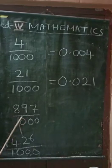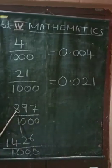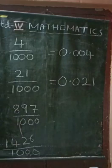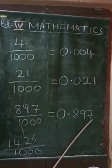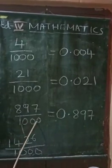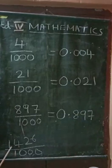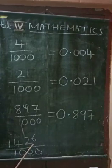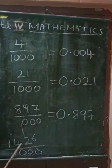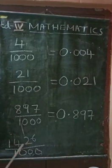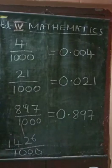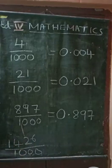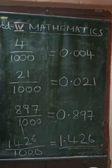Next, 897 by 1000. 1, 2, 3 digits — already 3 digits. So, 897 by 1000 equals 0.897, with 3 digits after the decimal. Next, 1426 by 1000: 1, 2, 3 digits needed after decimal, but 1426 has 4 digits. So, 1426 by 1000 equals 1.426.